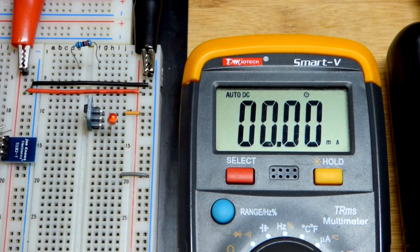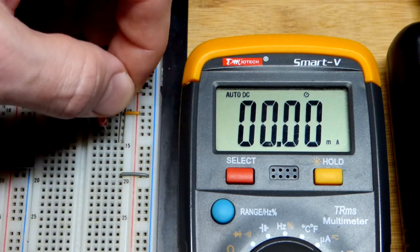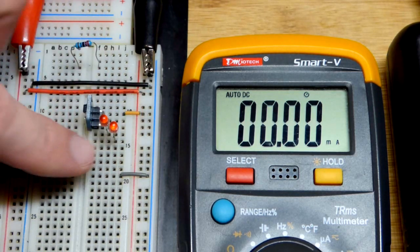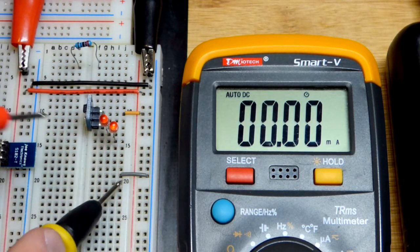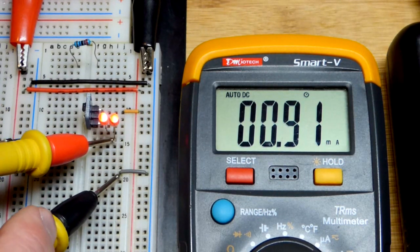It says 0.96. Make sure you put the LED the right way - long lead anode more positive, short lead cathode more negative, or else it won't light up. There you can see it went down a little bit to 0.91.